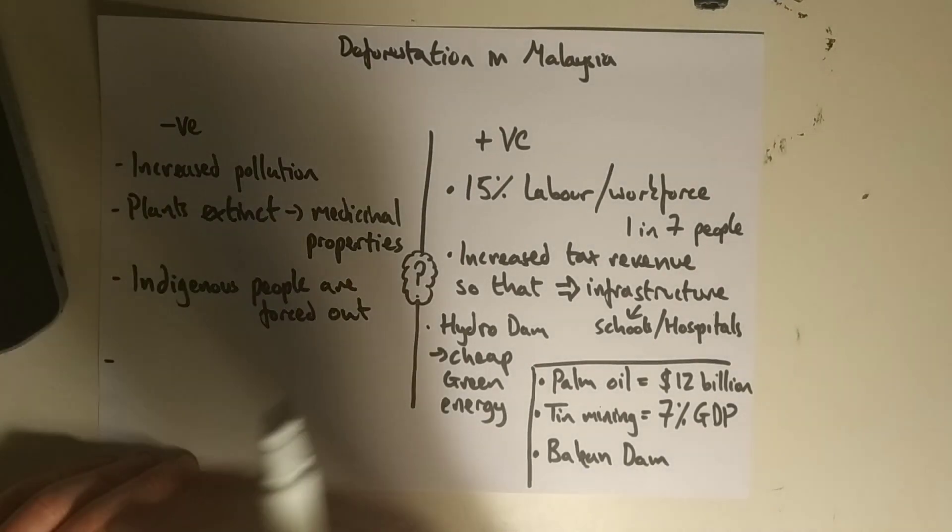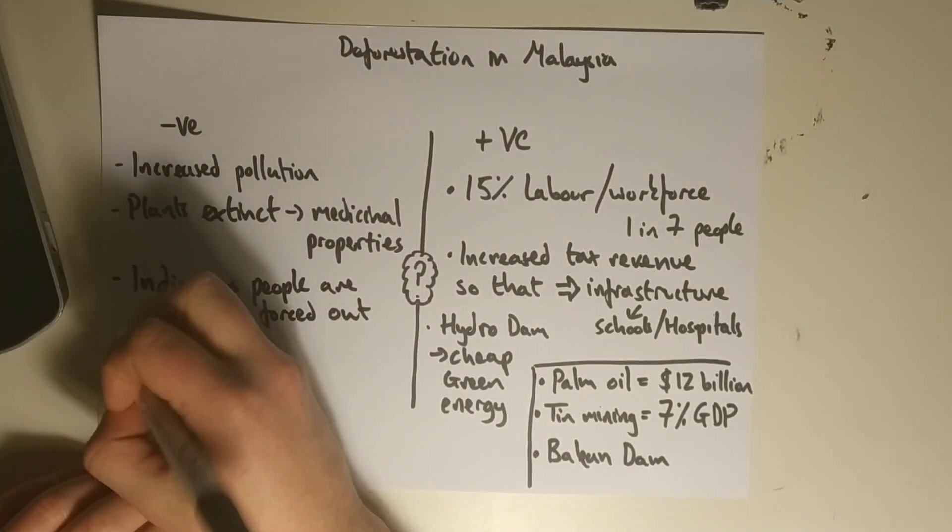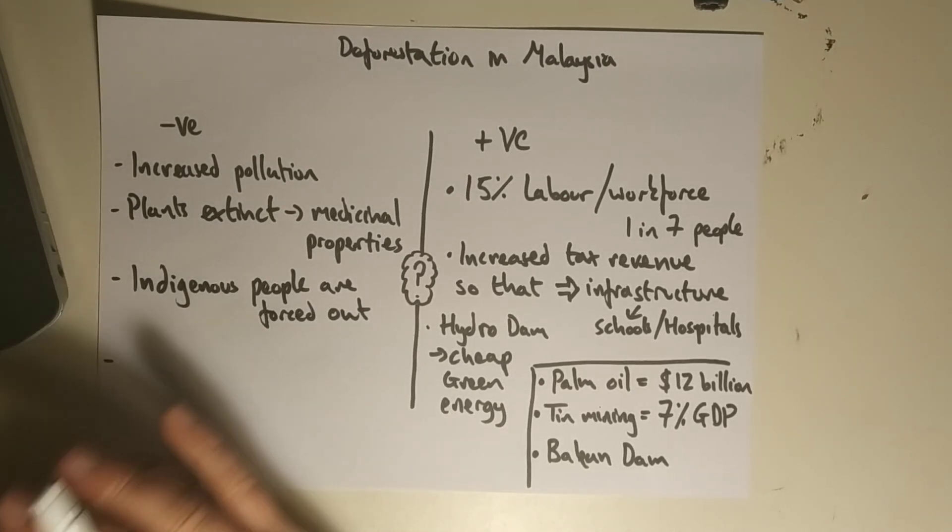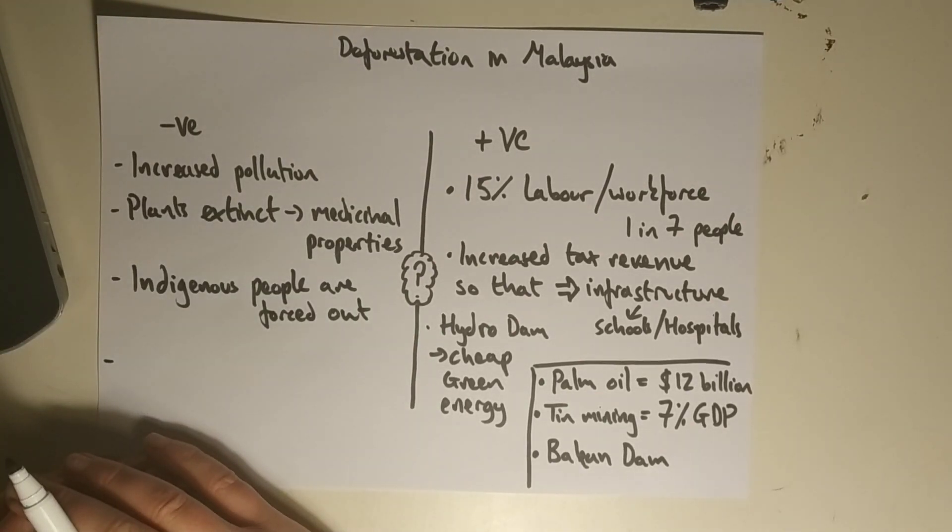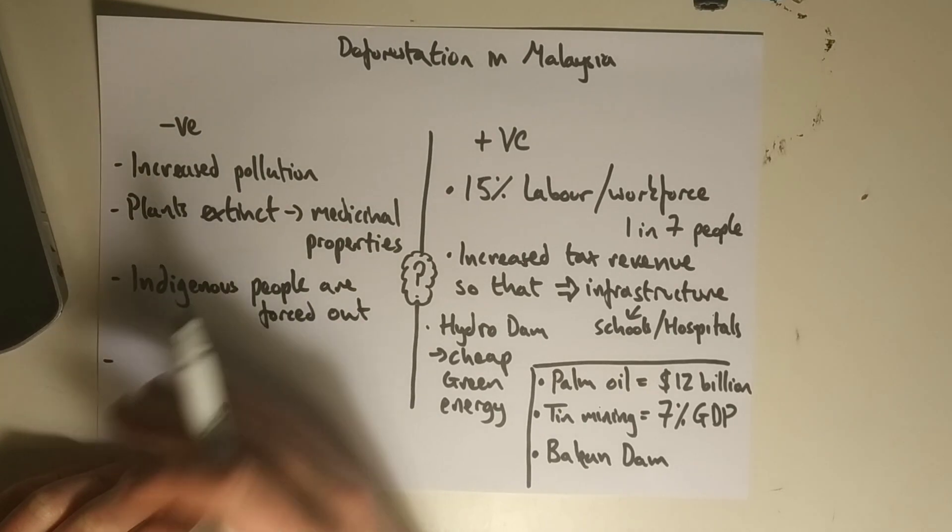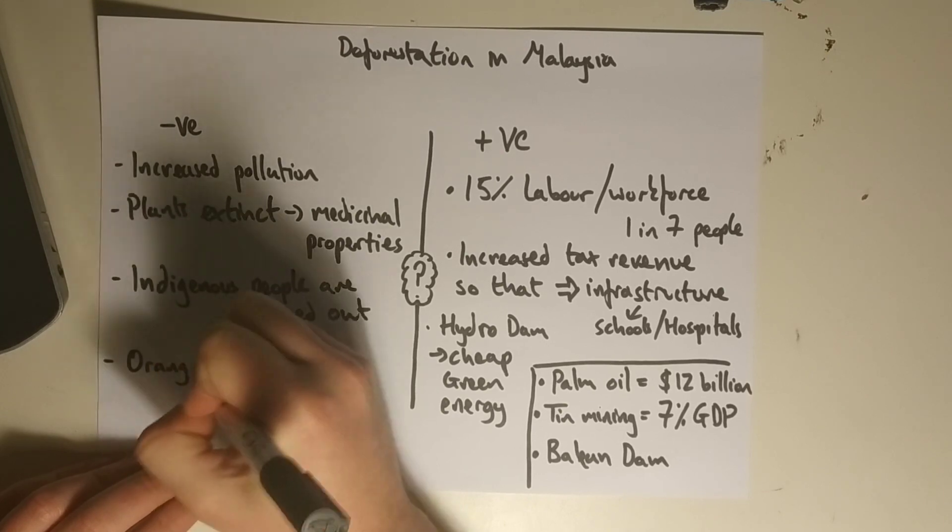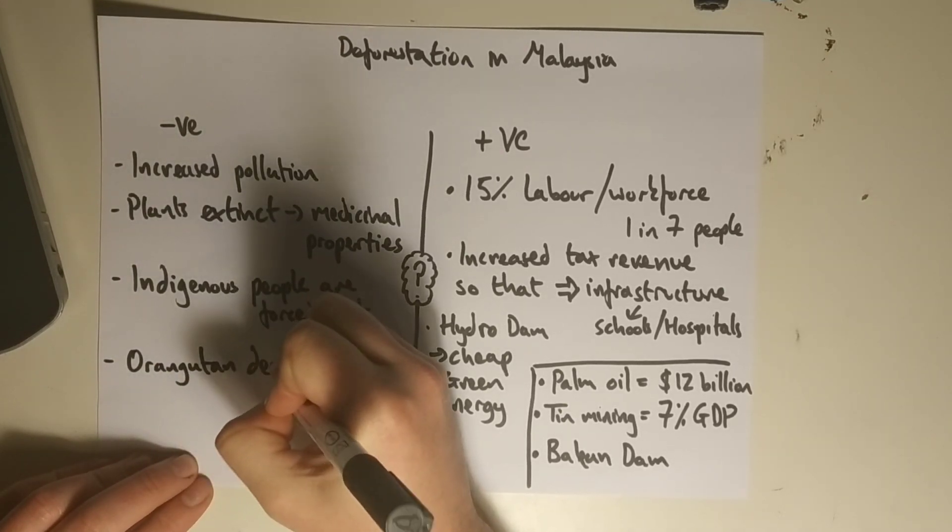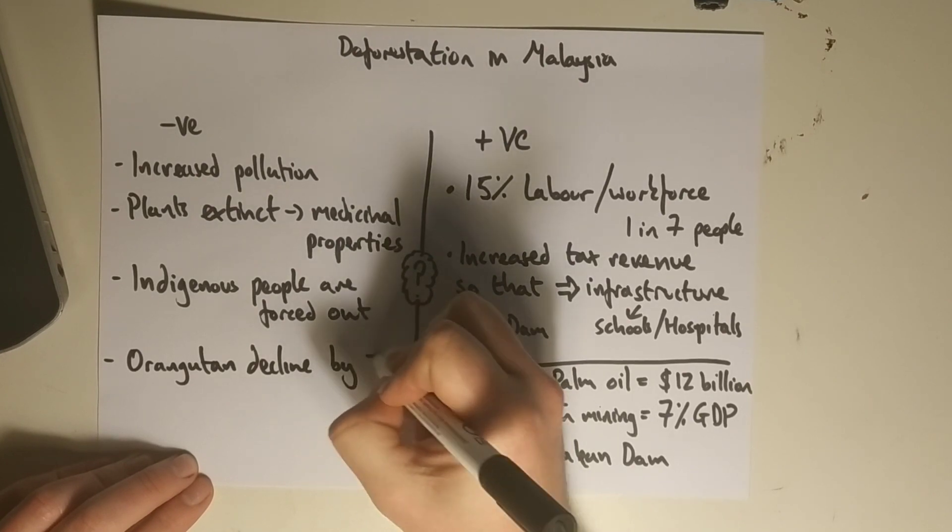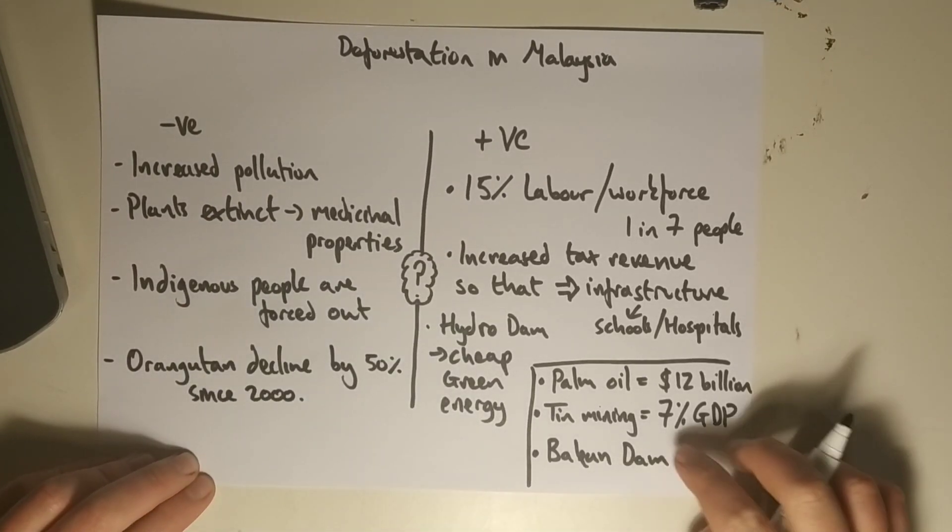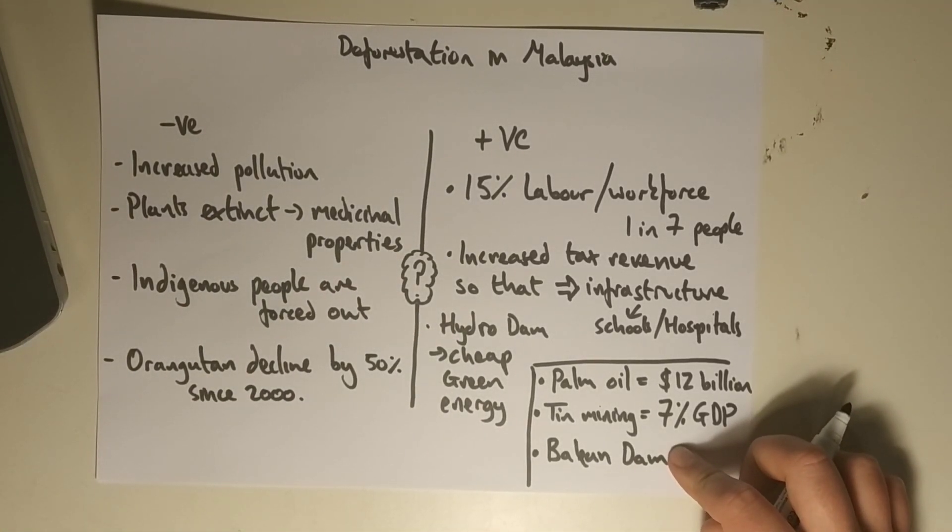Finally, this is probably the most famous one and what a lot of students focus on, which is absolutely fine. You will remember the Lidl advert, or was it Iceland, I can't remember, that came out around Christmas looking at the impact that palm oil was having on the orangutan population. And we've seen orangutan decline by about 50% since the year 2000.